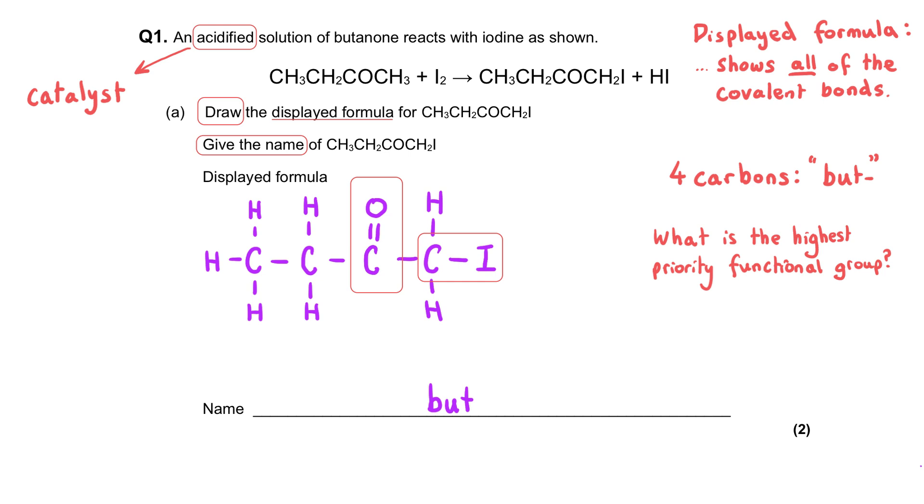The carbonyl group because it's doubly bonded gets the higher priority, and so that means we've got our chain of four carbon atoms which gives it the beginning 'but-' and then it is a ketone so it's going to be butanone as the core of this molecule.